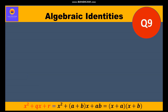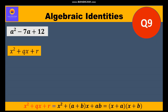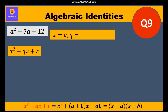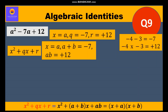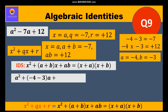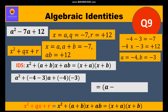Question 9: Factorize a² - 7a + 12. According to the standard form, x = a, q = -7, and r = 12, so a+b = -7 and ab = 12. We need two numbers whose sum is -7 and product is 12: that's -4 and -3, since -4 + (-3) = -7 and (-4) × (-3) = 12. Substituting in Identity 5, the factors are (a - 4)(a - 3).